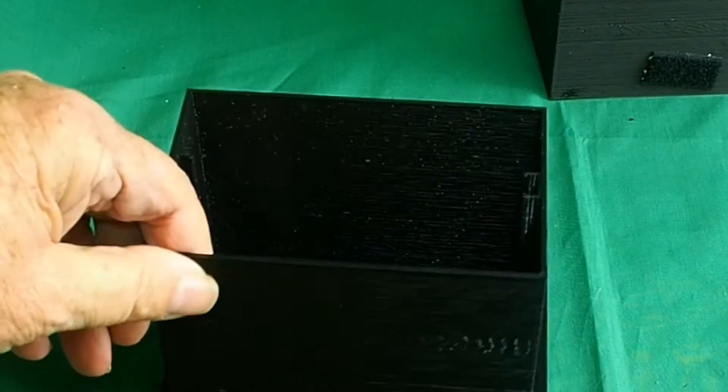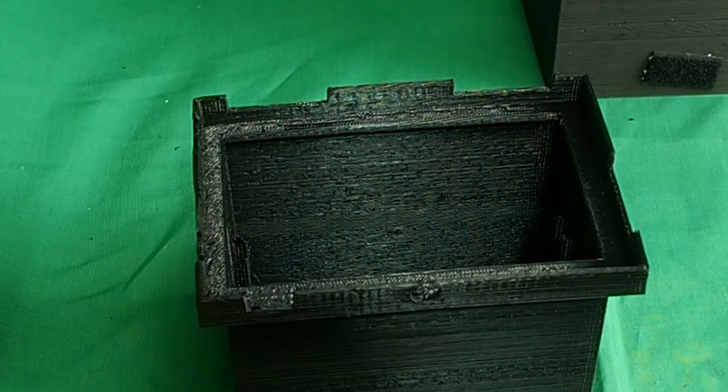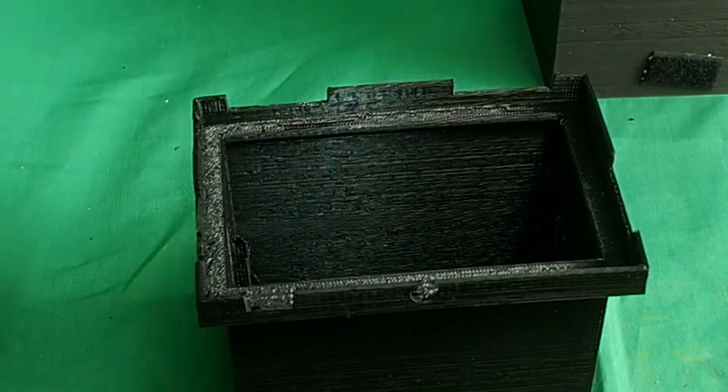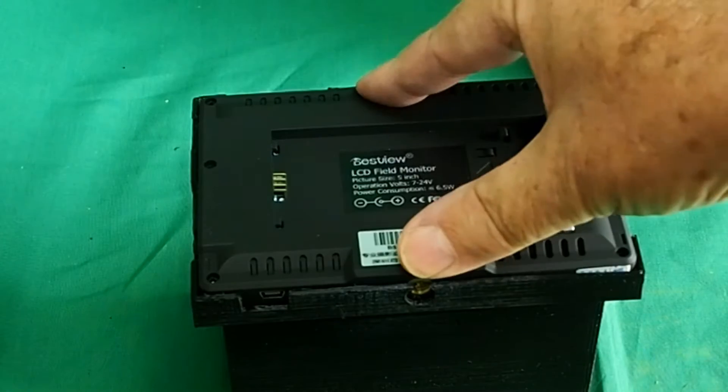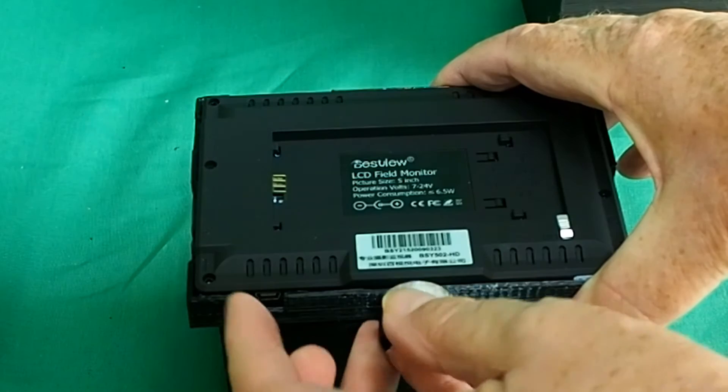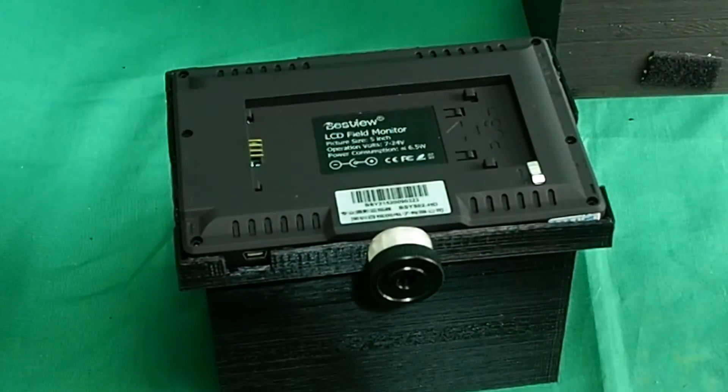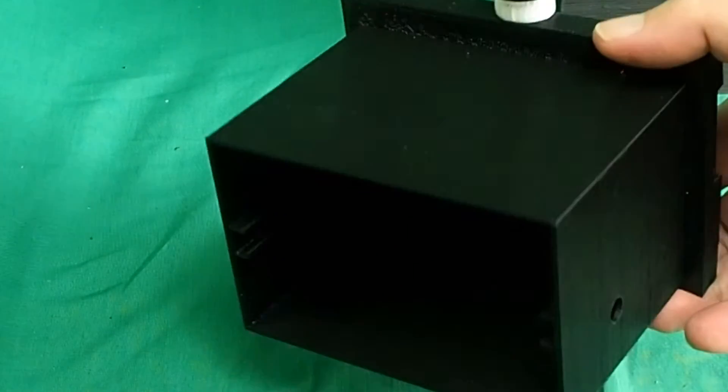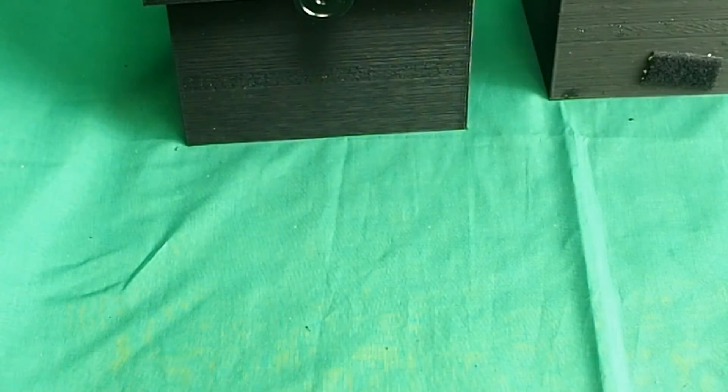There's another version for the 5 inch HDMI field monitor. Again that just plugs in to the appropriate goggles frame, and it can be fixed in place with a tripod screw. So that's the frame, the goggles frame, for the 5 inch field monitor. I'll show you how to assemble the goggles now.